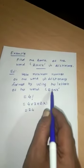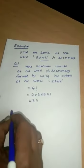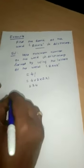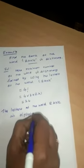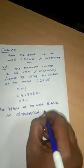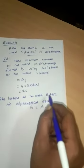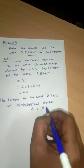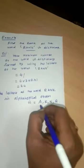We are going to form a dictionary using these four letters. First, we rearrange in alphabetical order. The letters of the word RANK in alphabetical order: first is A, next is K, then N, and R is next. This is the alphabetical order.